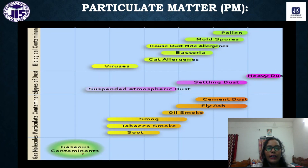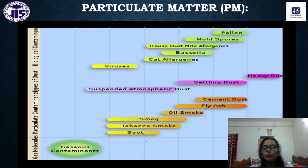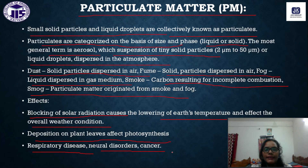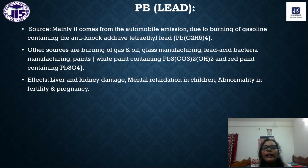Gaseous contaminants and particulate examples include soot — very small carbon particles — as well as tobacco smoke, oil smoke, fly ash, and cement dust.